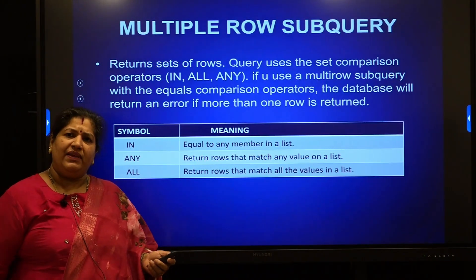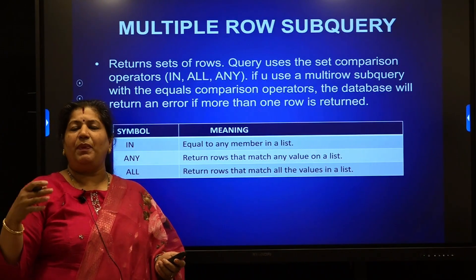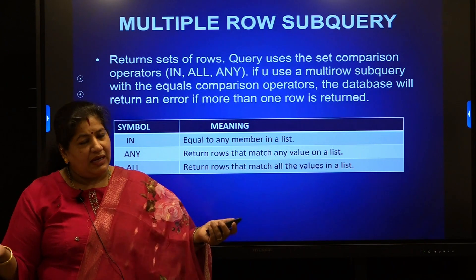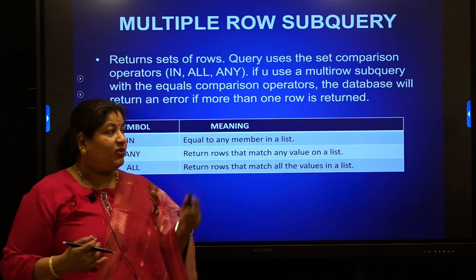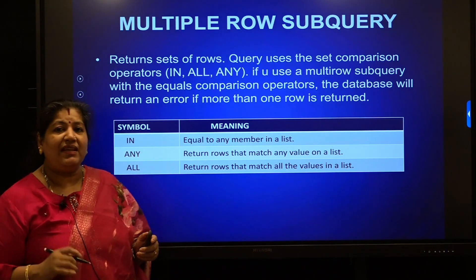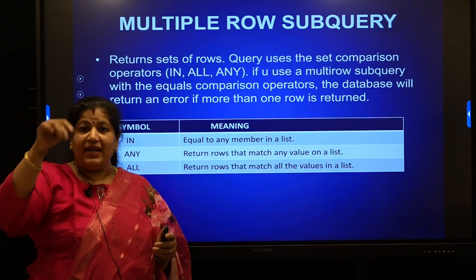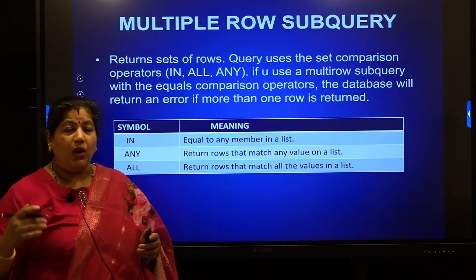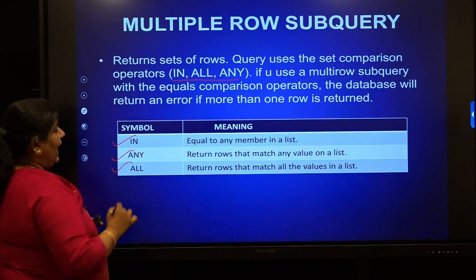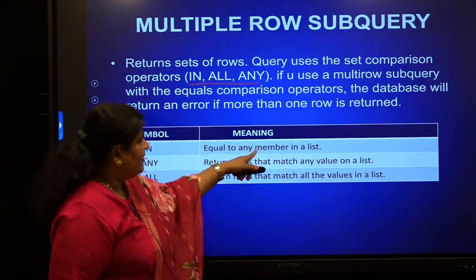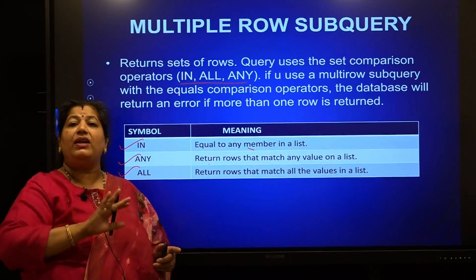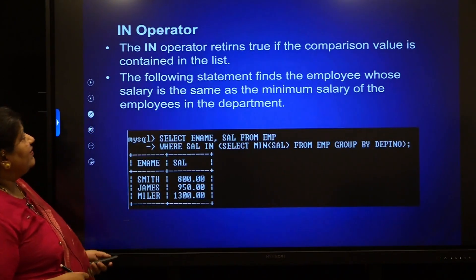Let us go to multiple row subqueries. When queries return multiple rows — for example, finding the total salary of each department returns three rows if there are three departments — such subqueries are called multi-row subqueries. Regular comparison operators like greater than or less than will not work because there are multiple rows. In such situations, the multi-row operators IN, ANY, and ALL are used. IN compares equal to any member in the list, ANY returns rows that match any value in a list, and ALL returns true only when all values match.